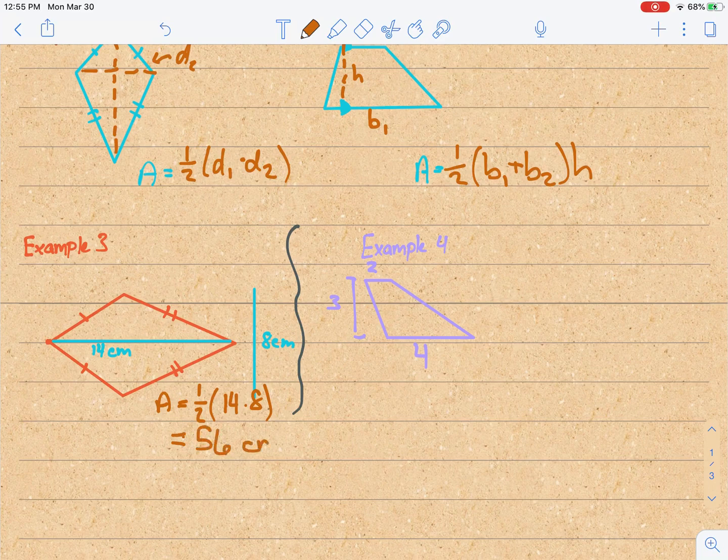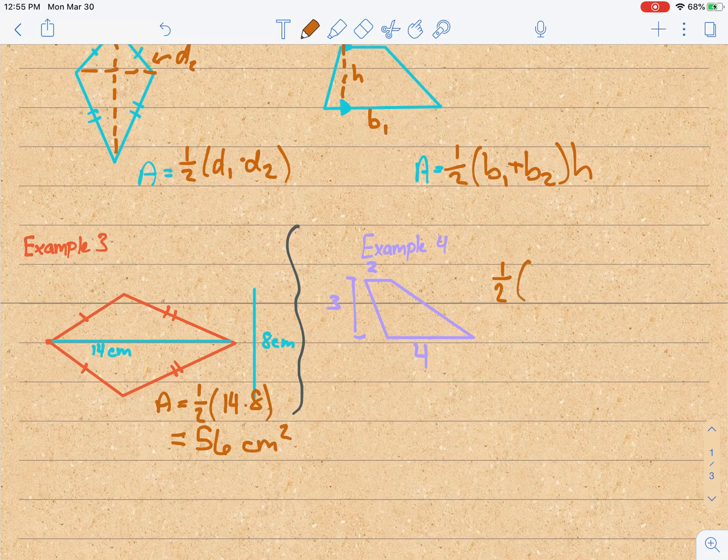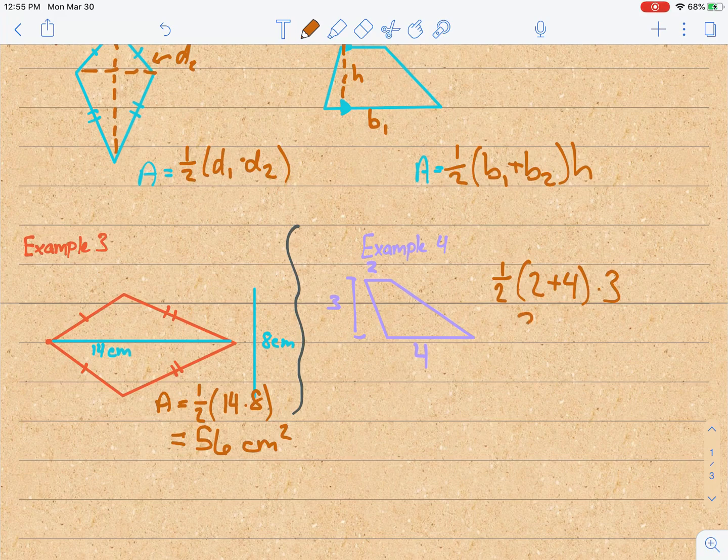And now let's run through the area of a trapezoid. It is 1/2 (base 1 plus base 2) times the height. So 1/2 of 2 plus 4 is 6, half of 6 is 3, 3 times 3 is 9 square units. Thank you.